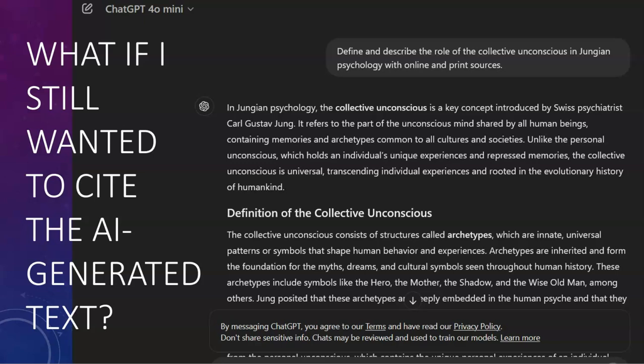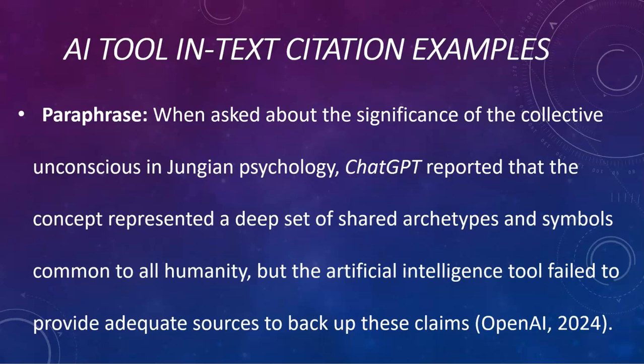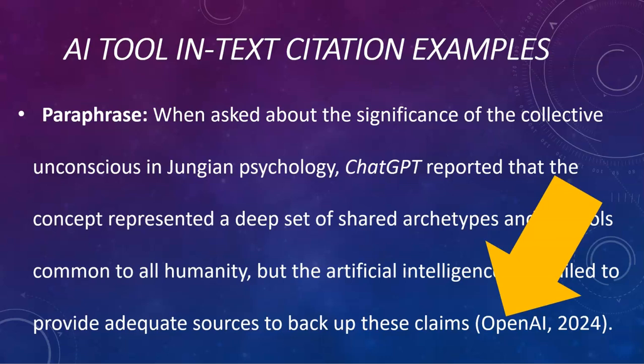That said, maybe you still like what the AI chat said and you still want to use it in your paper. APA likes us to use paraphrases, so if we wanted to bring in information from our chat with ChatGPT, here's a way we can do it: 'When asked about the significance of the collective unconscious in Jungian psychology, ChatGPT reported that the concept represented a deep set of shared archetypes and symbols common to all humanity. But the artificial intelligence tool failed to provide adequate sources to back up these claims.' We definitely want to add that qualification whenever we use dubious information from ChatGPT. We follow that up with an in-text citation that includes the name of the creator of the AI tool and the year the tool was made.